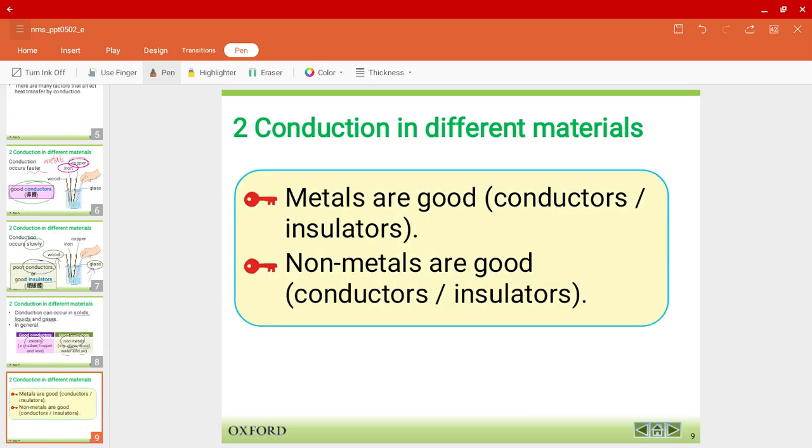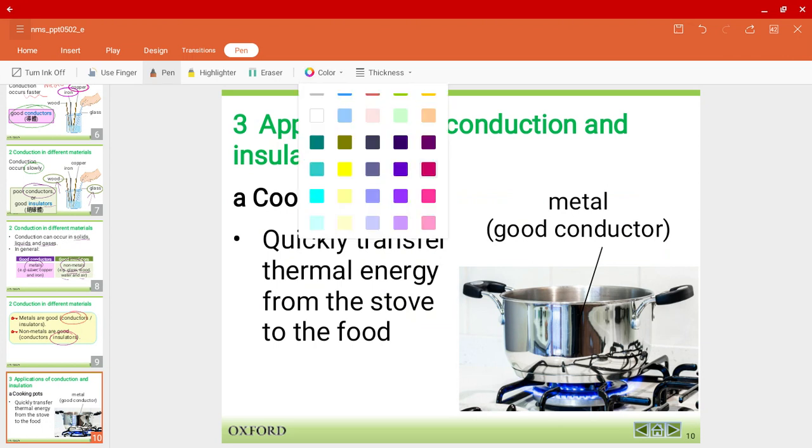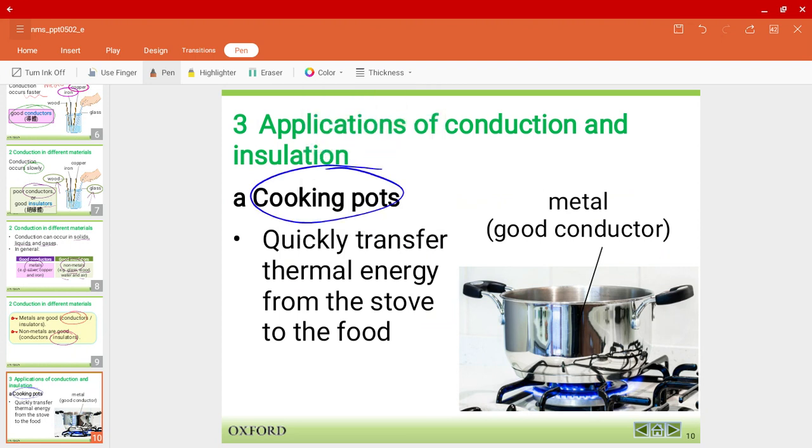As we've seen, metals are good conductors and non-metals are good insulators. Let's use this example to understand better. Some applications of conduction and insulation is, for example, you may go to your kitchen and have a look. Cooking pots.